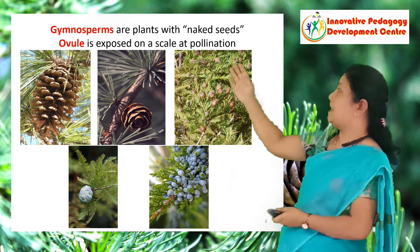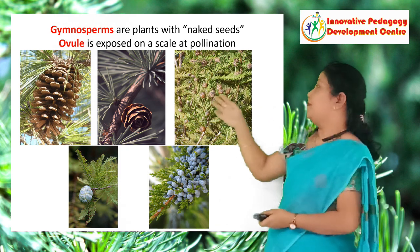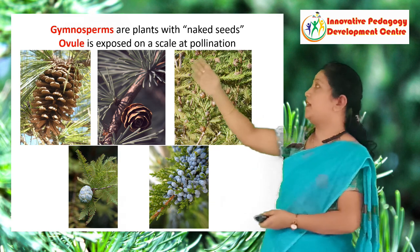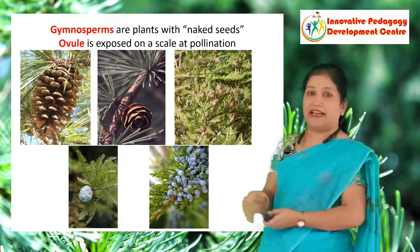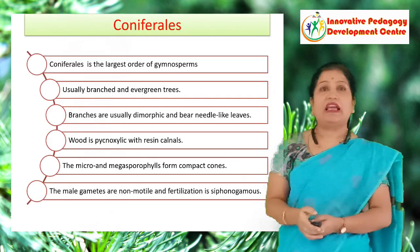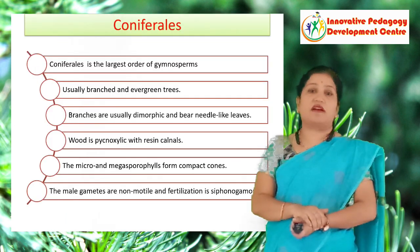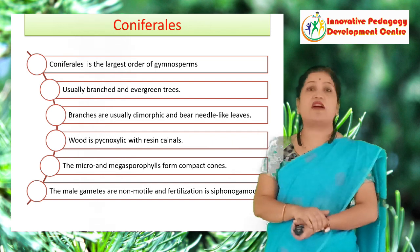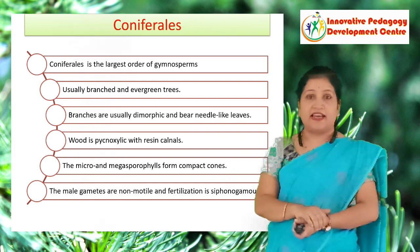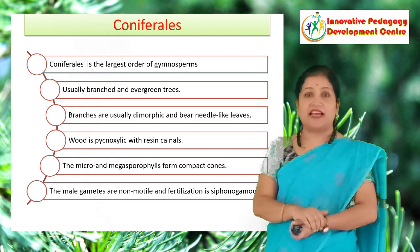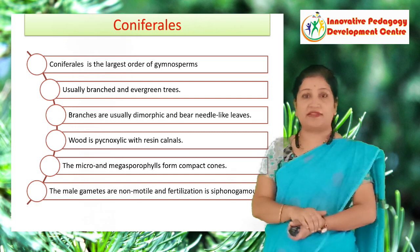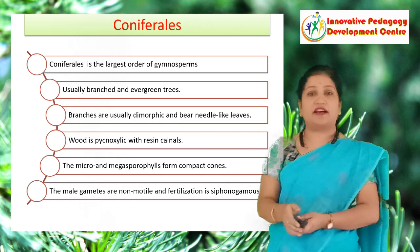Here you can see some beautiful pictures of the gymnosperms where the cones are highlighted. Let us focus on the most prominent or the largest order, Coniferales. These are mainly having branched evergreen trees, and the branches are dimorphic with needle-shaped leaves, and the characteristic feature is the presence of the resin canal.